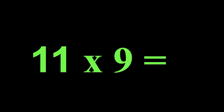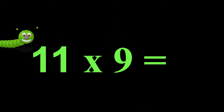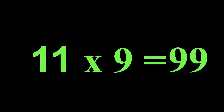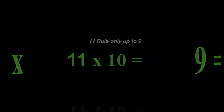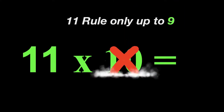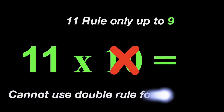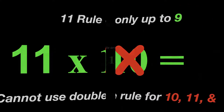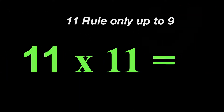Let's try another one. 11 times 9 — the other number is 9. So we start there, and then we just double it for 99. Now please remember that the 11 rule will only work up to 9. For example, it will not work for 10, 11, and 12. So remember, only up to 9.